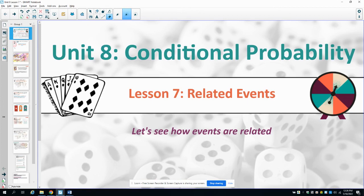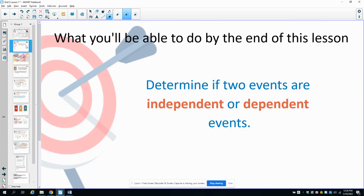In this video, we are going to look at Unit 8, Lesson 7, which is on Related Events. By the end of this lesson, you will be able to determine if two events are independent or dependent.